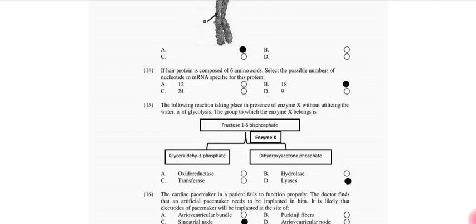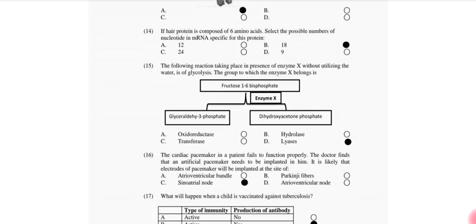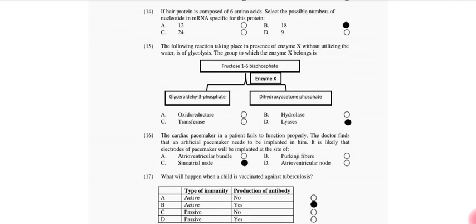The following reaction takes place in the presence of enzyme X without utilizing water. It is part of glycolysis. The group to which the enzyme X belongs is lyase. The cardiac pacemaker in the patient will not function properly. The doctor finds that an artificial pacemaker needs to be implanted in him. It is likely that the electrode of pacemaker will be implanted in the site of sinoatrial node.